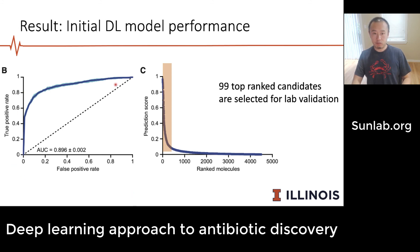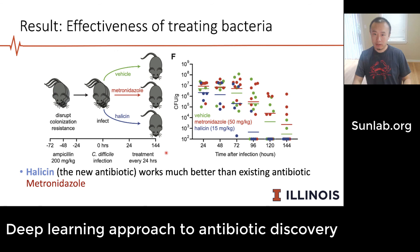The final deep learning model achieves an area under the ROC curve close to 0.9, which is very high. They then use it to score all molecules in the Drug Repurposing Hub database, finding 99 top candidates selected for lab validation. In lab validation they identify the molecule halicin, and comparing it to a known antibiotic treatment and a no-treatment control, there is a very clear benefit shown by halicin over time compared to the other conditions.